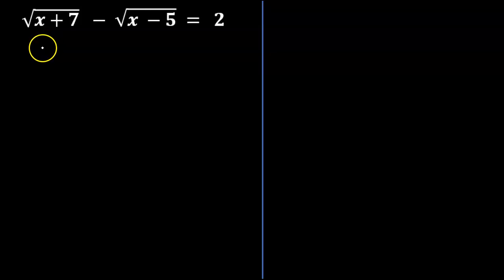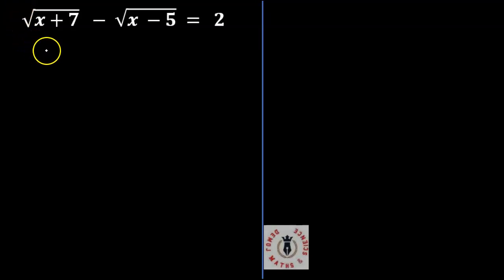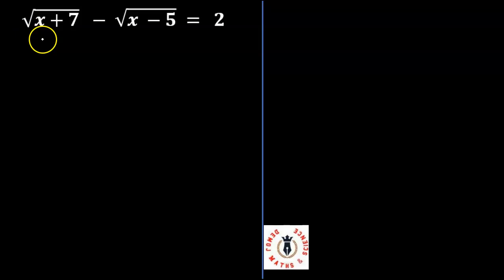Hi, in this lesson, we'll use this example to understand how to solve radical equations using conjugate radicals. Now, this example says the root of x plus 7 minus the root of x minus 5 is equal to 2.